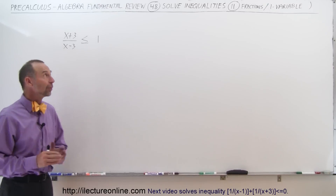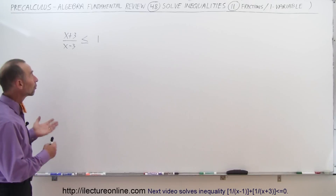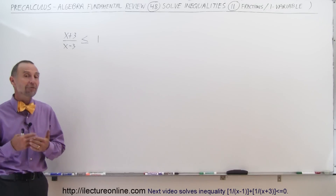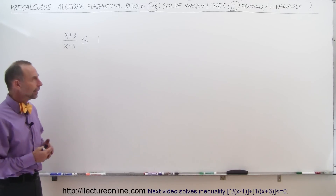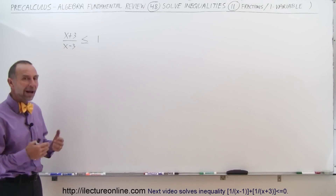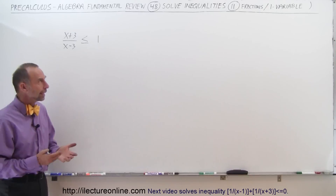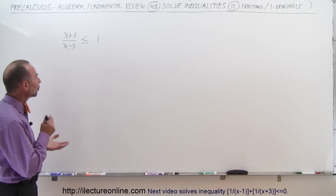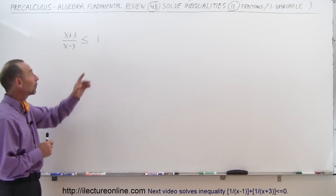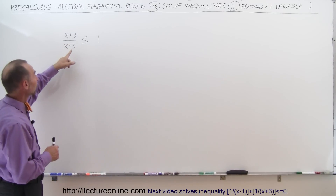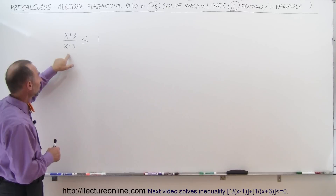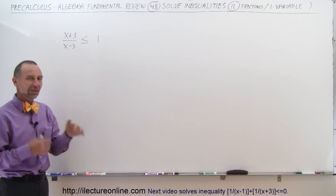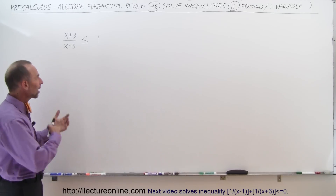Welcome to ElectronLine. Here we have an interesting problem — a fraction on the left side, which we call a rational inequality. The rules here are a little bit different. We have x plus 3 divided by x minus 3 is less than or equal to 1.